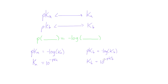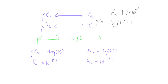So with that said, let's do a little example. We know from the last video that the KA of acetic acid is 1.8 times 10 to the negative 5. If we want to find the PKA of acetic acid, all we have to do is take the negative log: PKA is equal to the negative log of 1.8 times 10 to the negative 5. If we just punch this into our calculator, our PKA is going to be equal to about 4.7.